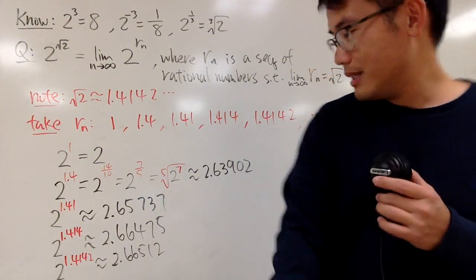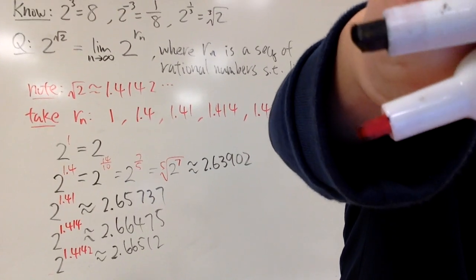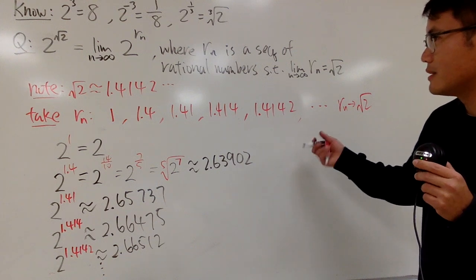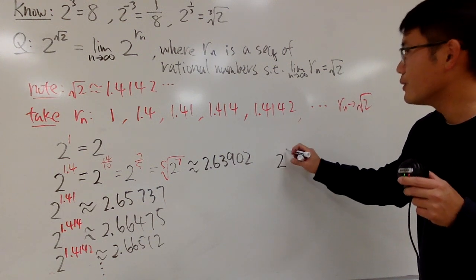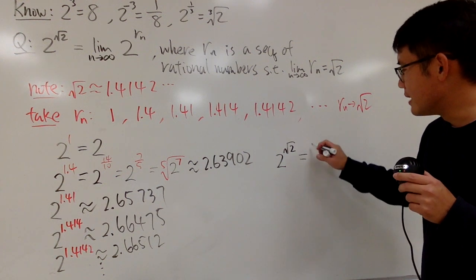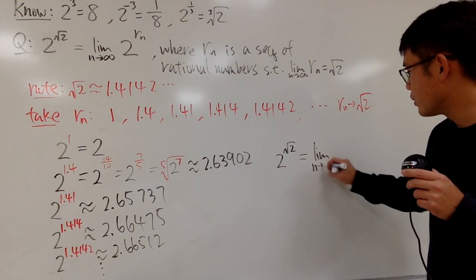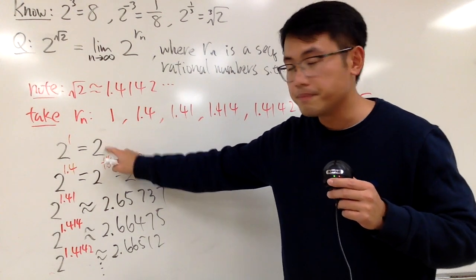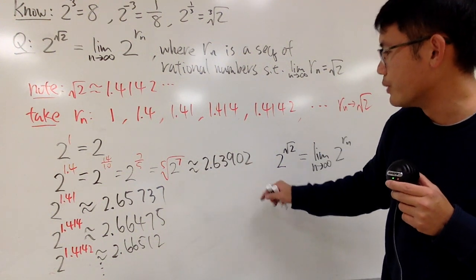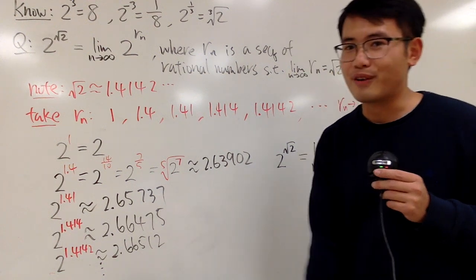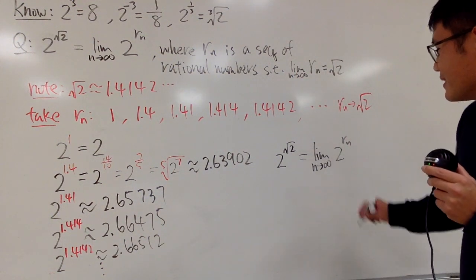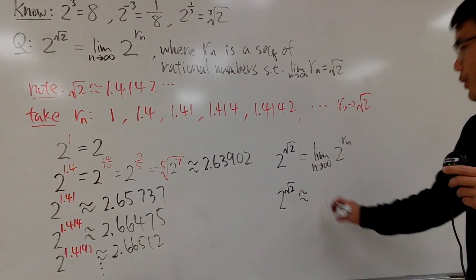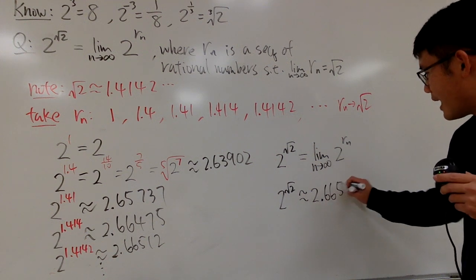Of course, you have to keep this going on forever. So what we are saying is that 2 raised to the square root of 2 power is defined as the limit as n goes to infinity of 2 to the rn power. You can look at this as a sequence: it goes from 2 to 2.63902, and so on. This sequence does converge, and 2 to the square root of 2 is approximately 2.66514.